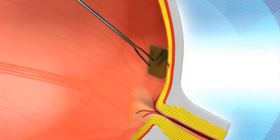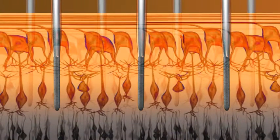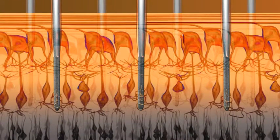The implant is attached to the retina, and the implant's electrodes interface with the eye's bipolar neurons.